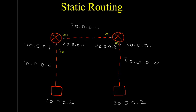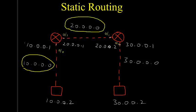Hello everyone, welcome to computer network practical. Today we'll be doing static routing. This is the topology — we have two routers and two PCs. There are three networks: 10.0.0.0, 20.0.0.0, and 30.0.0.0.